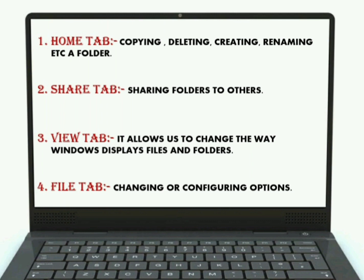The second one is the Share tab. The Share tab gives us different options to share our files and folders. For example, if you want to email a file, you can use this Share tab. Next is the View tab. The View tab allows us to change the way Windows displays files and folders. You can add additional panes to show a preview of your file, change the layout of files and folders, sort, arrange, or hide items. Any of these activities can be done through the View tab.